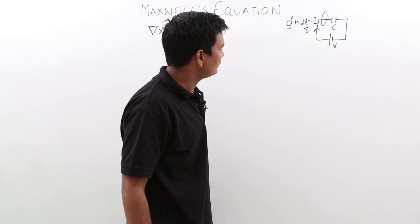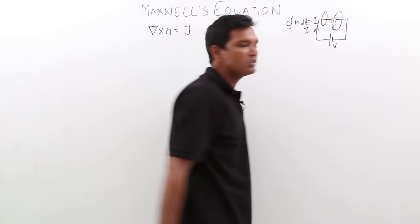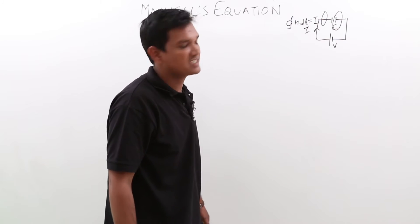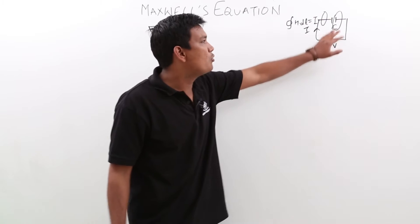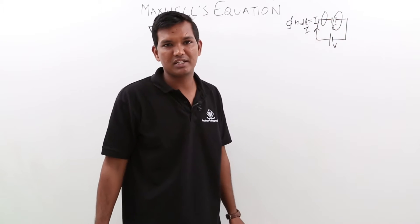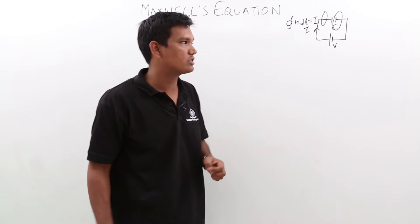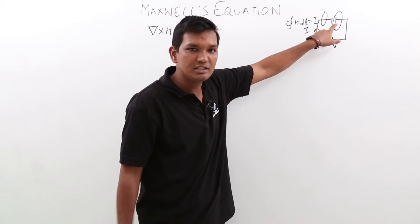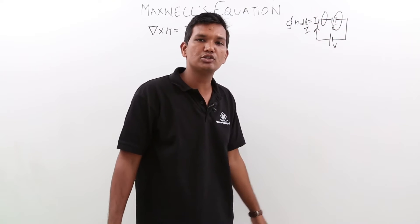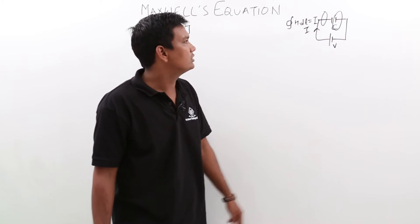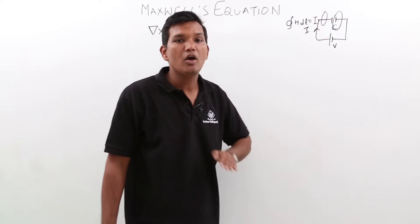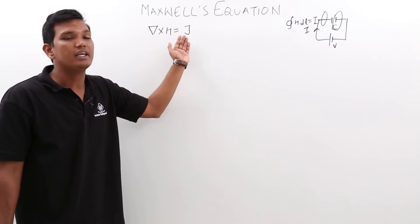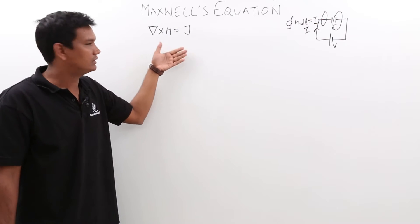Now, if I take the same line integral across the capacitor, H dot dl across the capacitor would be zero, because there is no current flowing across the capacitor — we know that a capacitor will have charges. So does it mean the current is also zero? The answer is no, because current across the capacitor will exist. This means whatever equation we stated in the previous video is incomplete, and we will try to complete it in this lecture.